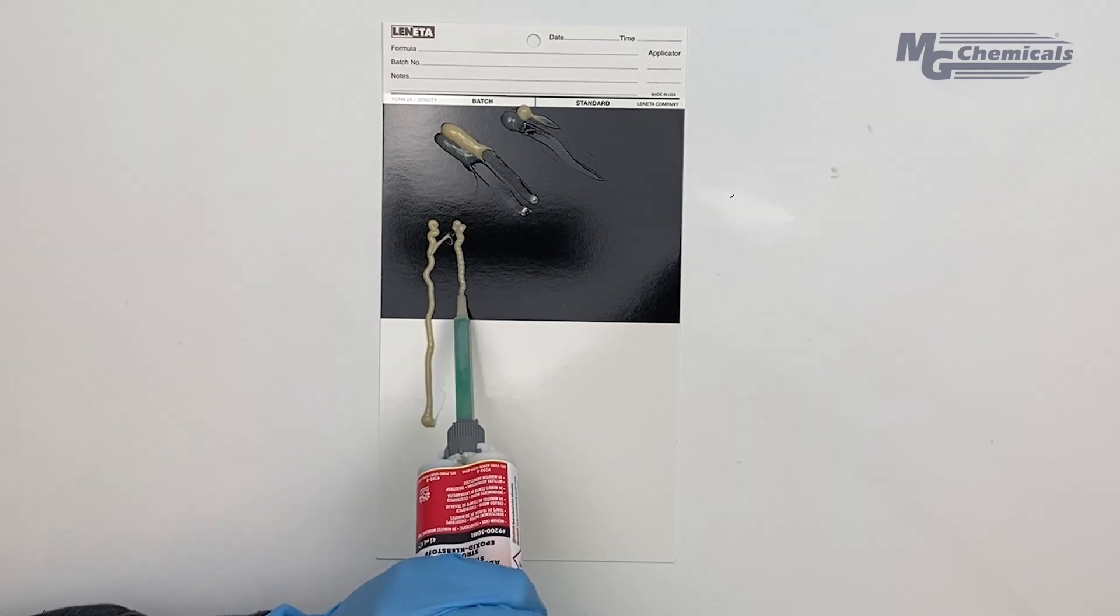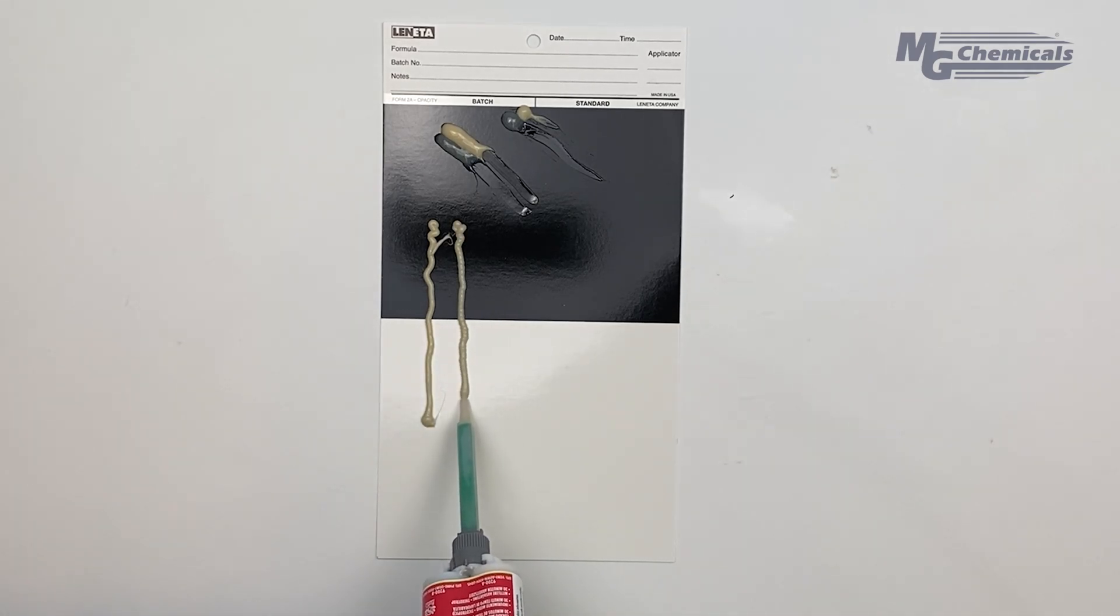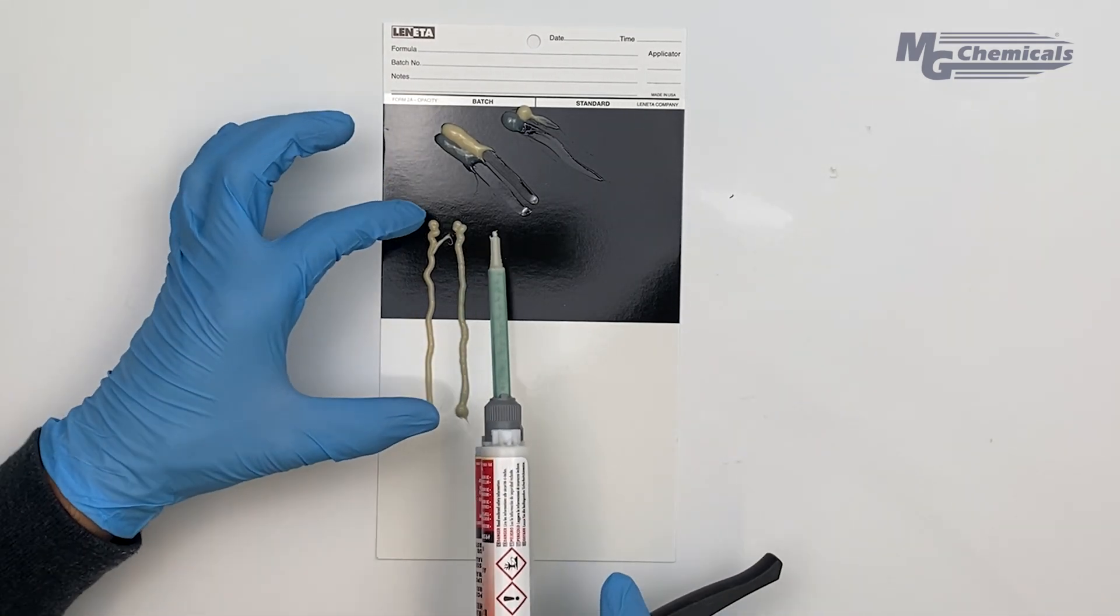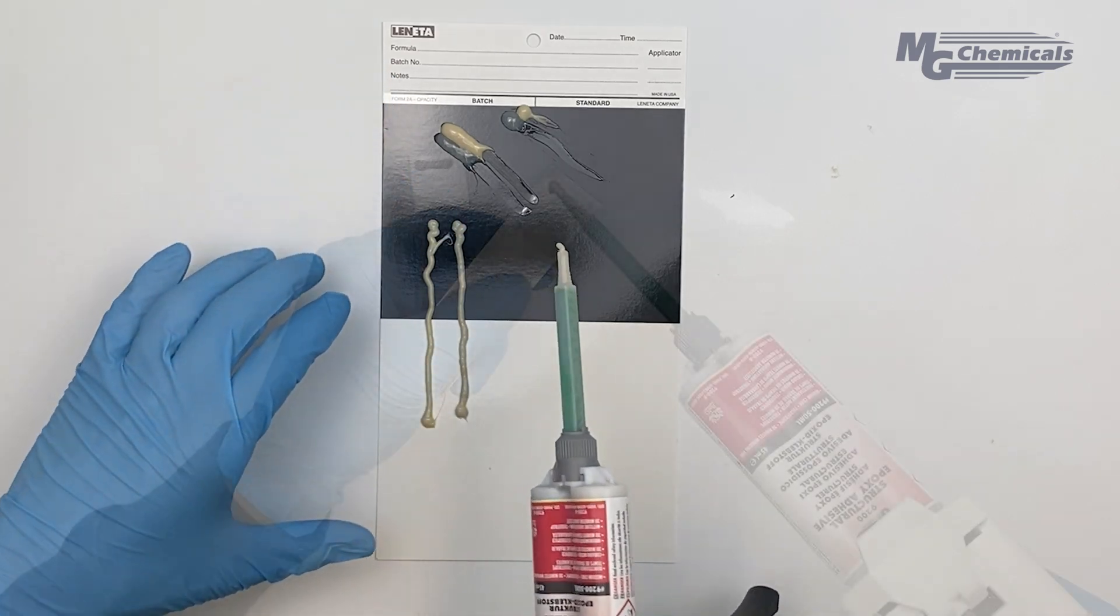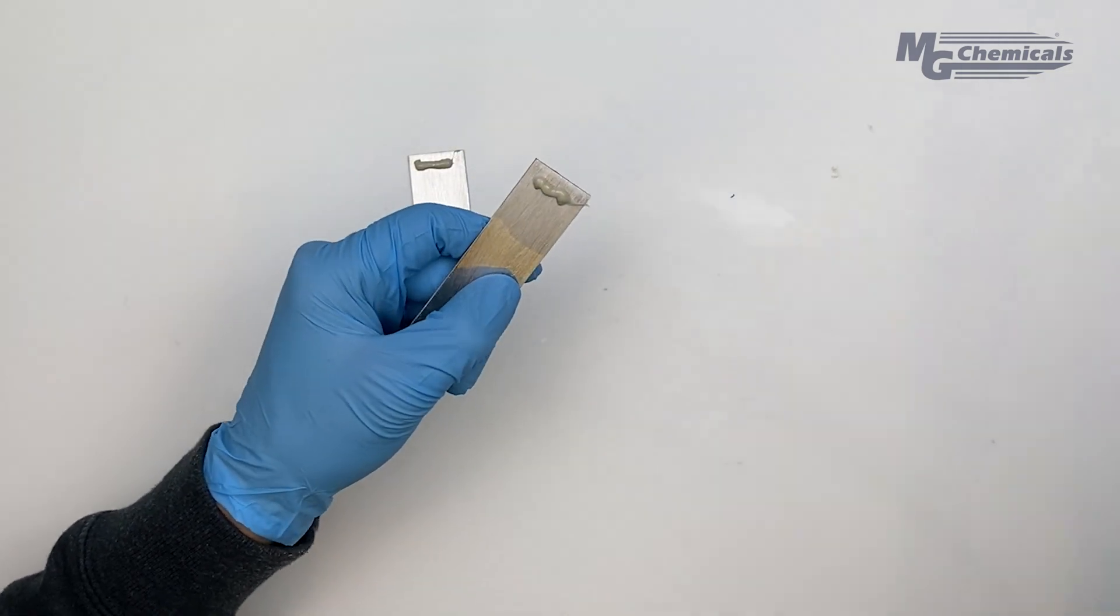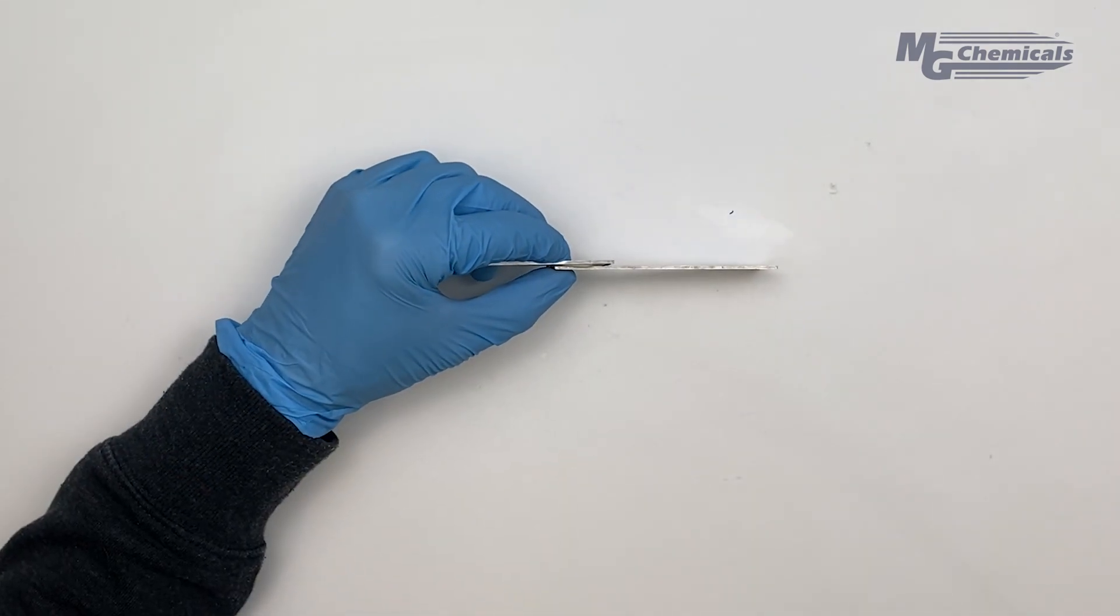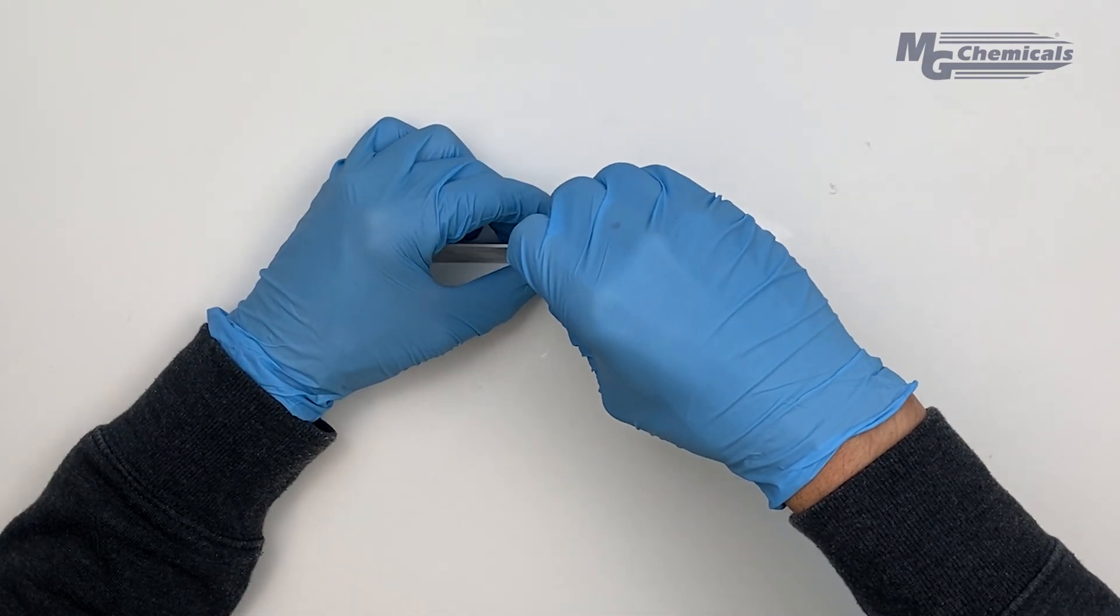Dispense a line of material equal length to that of the mixing tip and discard. Like with the example of manual mixing ensure the adhesive is spread over the surface to be bonded and use compression.